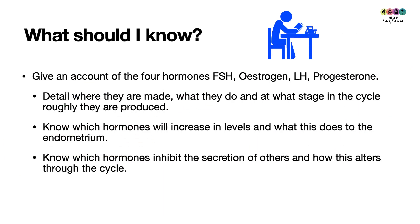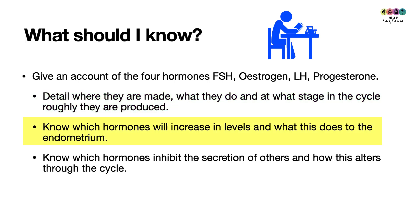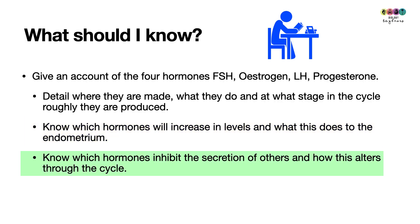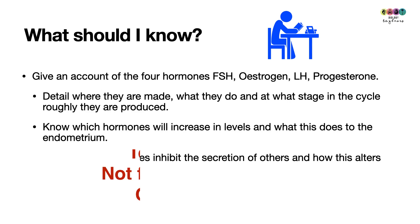At the end of this video, you should be able to give a full account of FOLP — Follicle Stimulating Hormone, estrogen, Luteinizing Hormone, and progesterone — detailing where each is made, where it goes, what it does, and at what stage of the cycle it is produced. Know which hormones increase levels, what this does to the endometrium, and how hormones inhibit one another. This is a simplified version of events, so please find exam questions and official marking schemes and practise them.